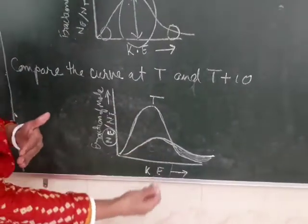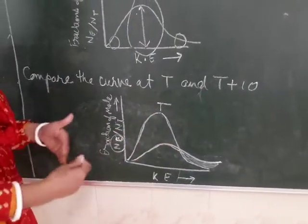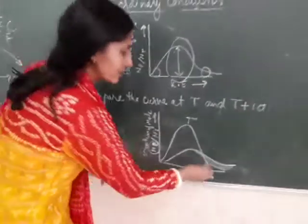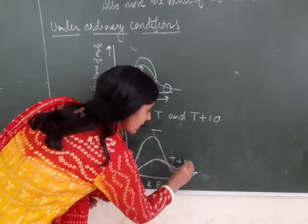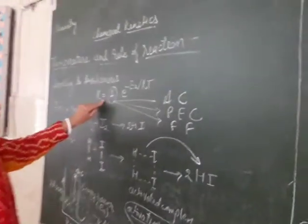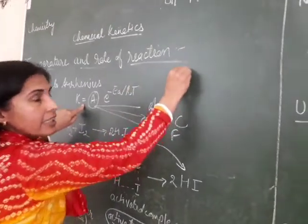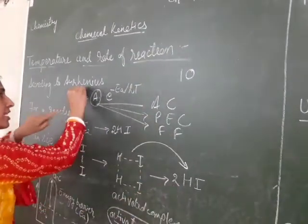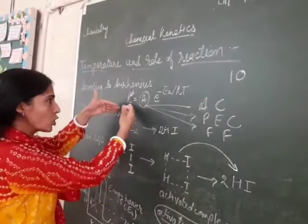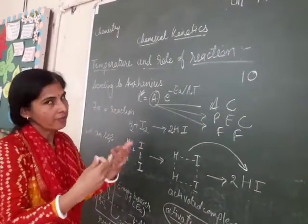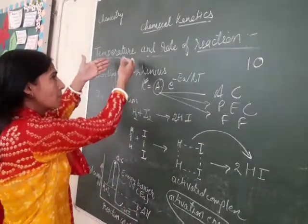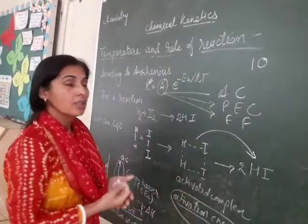Entering into the reaction means making the activated complex. Making activated complex means making out the more products, and this is why Arrhenius said that with every rise in 10 degrees of temperature, the reaction constant nearly becomes double. If the reaction constant is doubling, definitely the rate of reaction is also doubling. So this is how temperature affects rate of reaction.